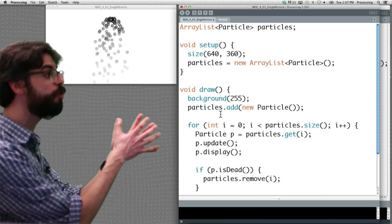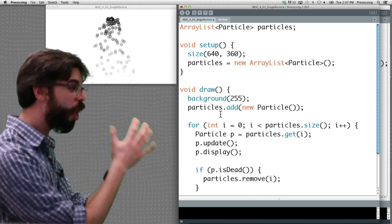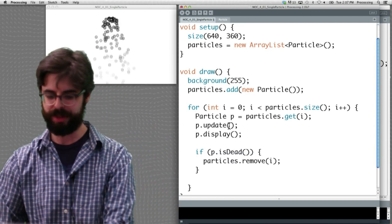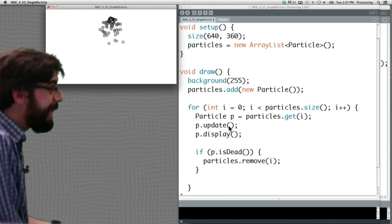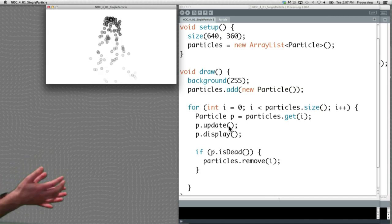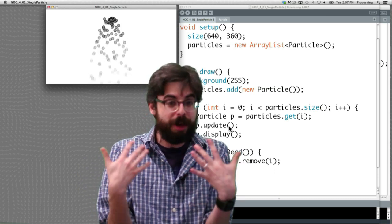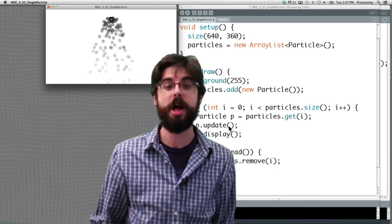But now down here I can say, let's make sure, right? Remember we have this function isDead. We have this function isDead that says when lifespan is less than zero, give us the value true. Awesome. That's exactly what we need. If p.isDead, then particles.remove i. Because if we're looping through the ArrayList, we're on particle i. If particle i is dead, remove particle i.